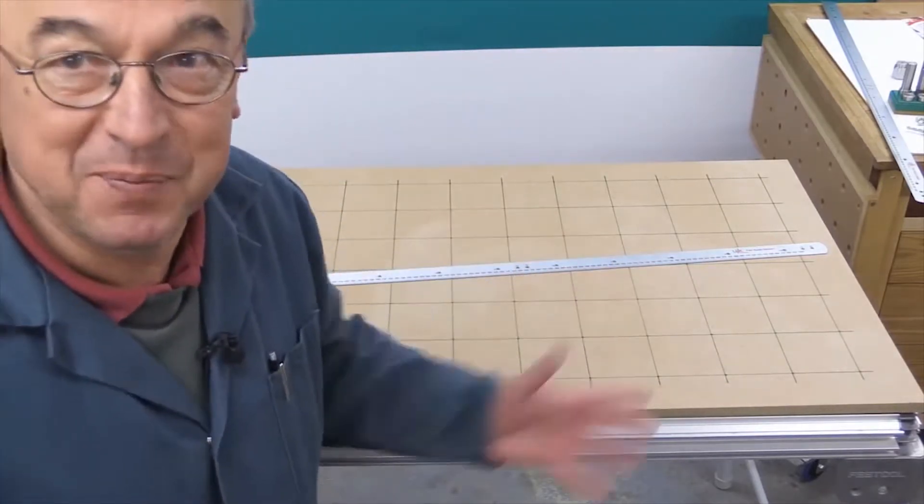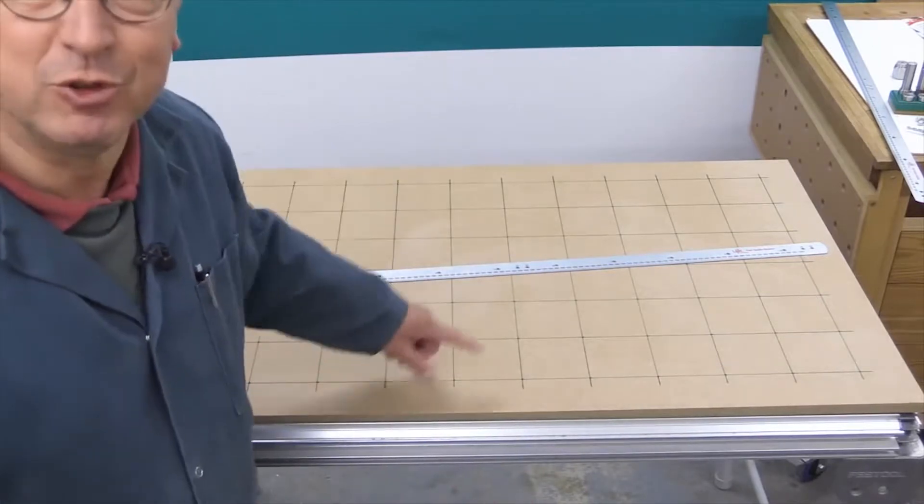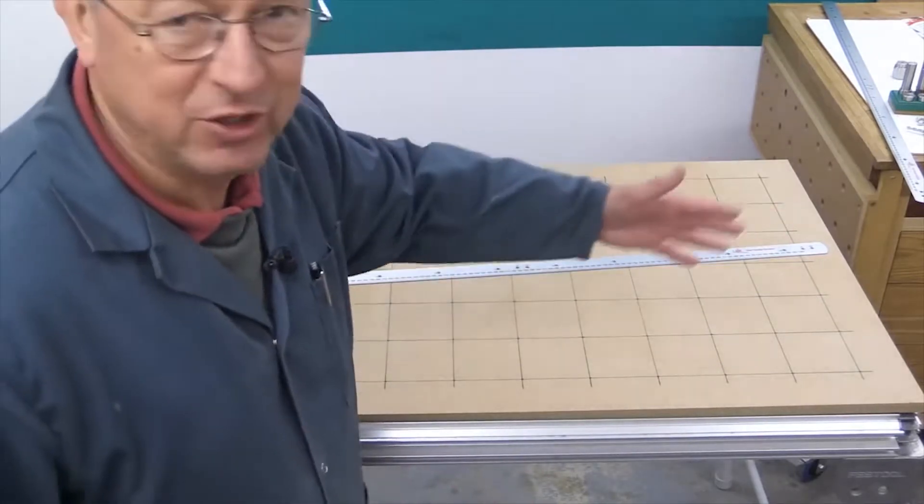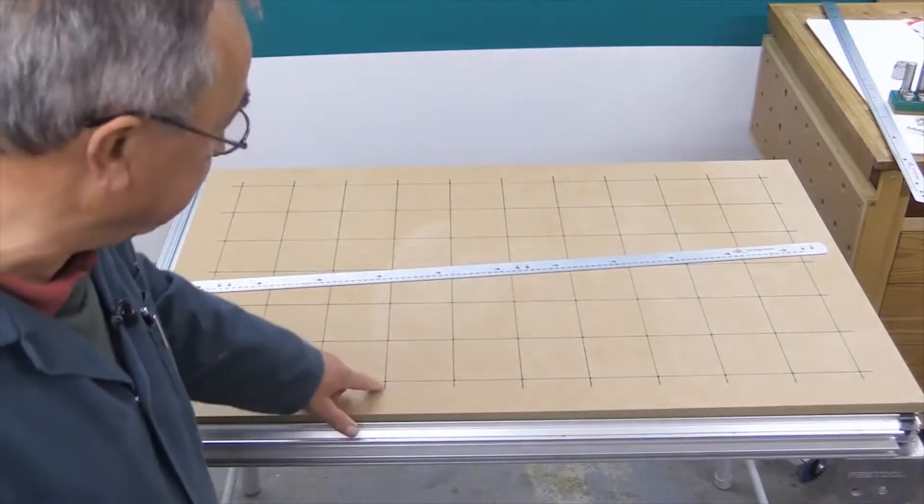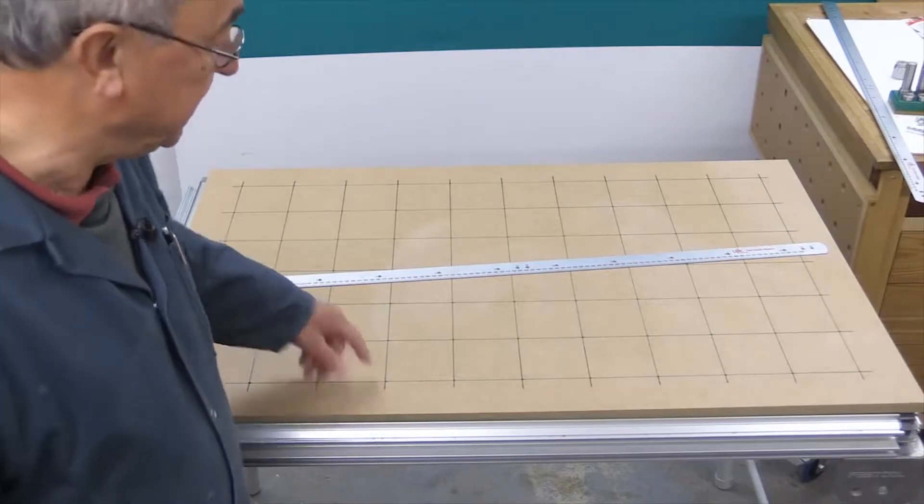To make this easier to explain, I've already created the pattern of three millimeter holes on this brand new MFT3 top at the normal 96 millimeter centers. I've drawn some green lines, both horizontally and vertically, which intersect where the three millimeter holes are.